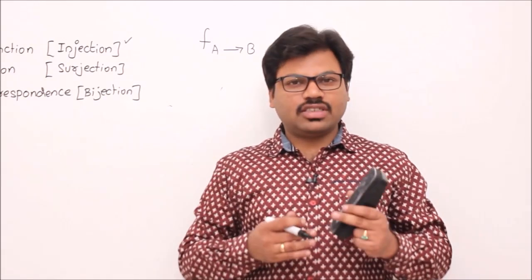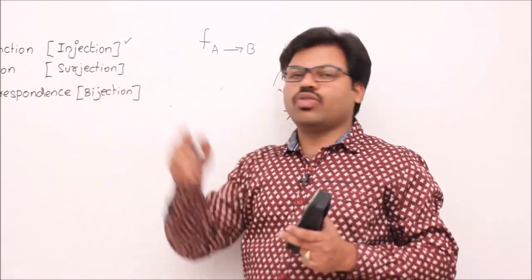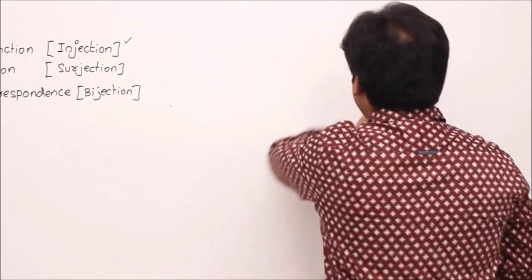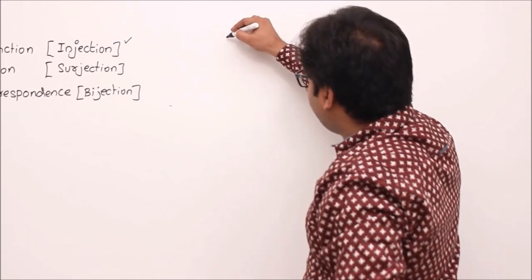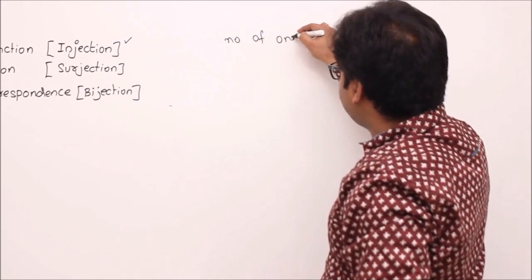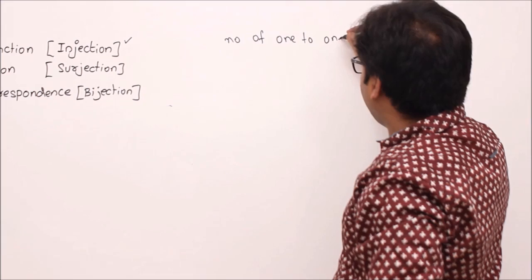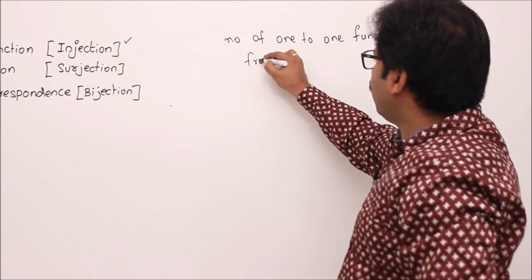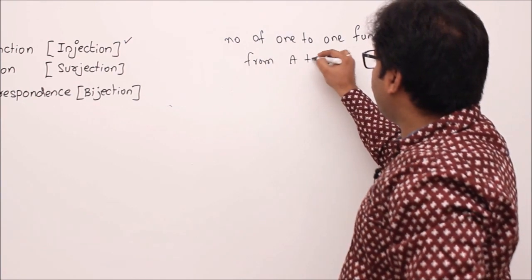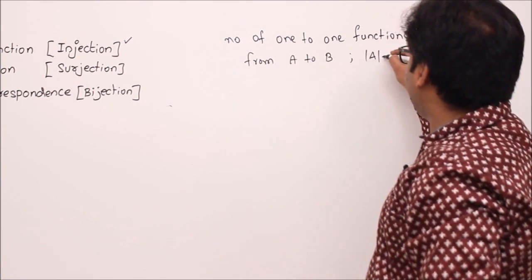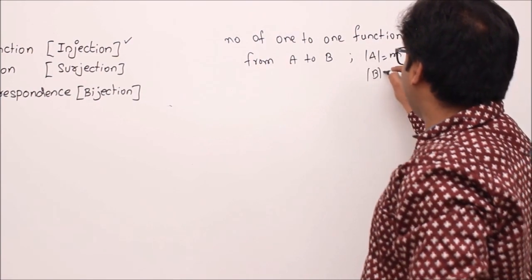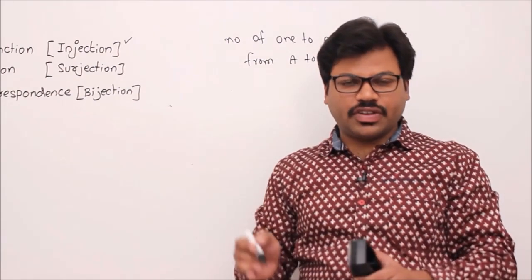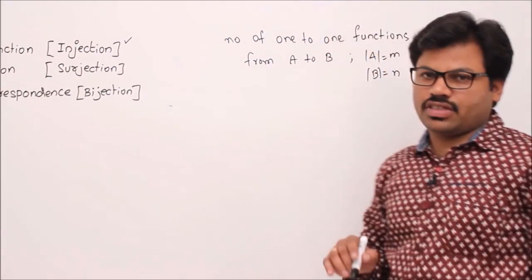Two questions arise about one-to-one functions: first, how to check whether a given function is one-to-one; second, how many one-to-one functions are possible from set A to set B. Let's find the number of one-to-one functions from A to B, where |A|=M and |B|=N.